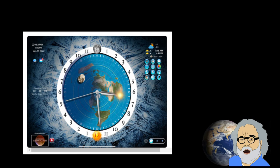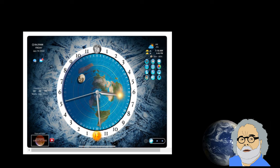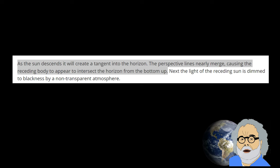When asked what causes sunrise and sunset on a flat earth, almost every flat earther answers with perspective working on a circular motion of the sun above the flat earth.